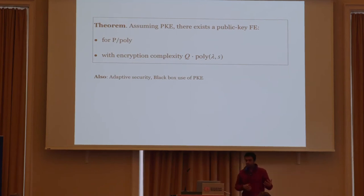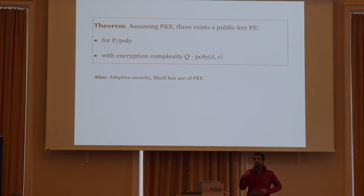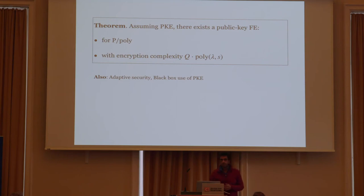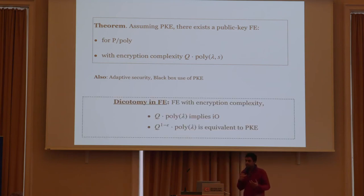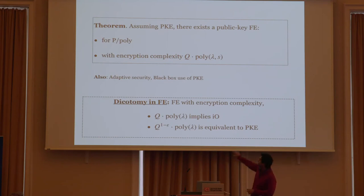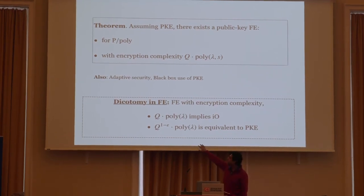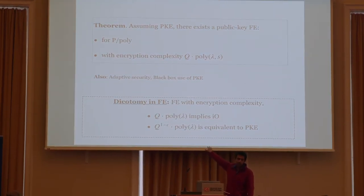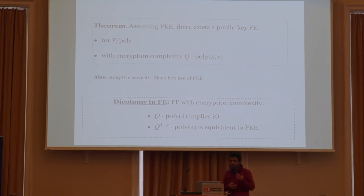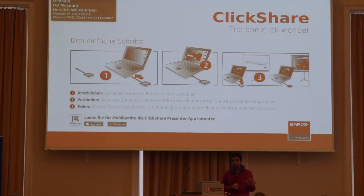As an added advantage, our scheme also satisfies adaptive security — meaning the adversary can make functional queries in an adaptive manner. Moreover, our construction makes black-box use of public key encryption. Our work establishes a dichotomy in functional encryption: if you can construct an FE scheme sublinear in Q, that would imply IO; and we showed that if you get an FE scheme linear in Q, that is equivalent to public key encryption. The previous best-known result achieved FE with encryption complexity quadratic in Q, and was only selectively secure and from learning with errors.